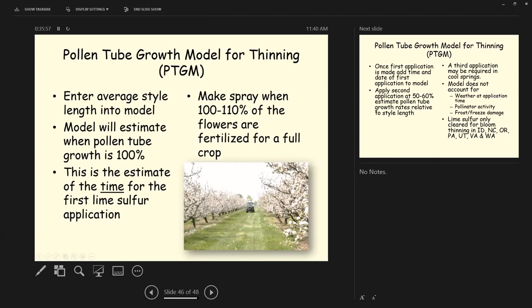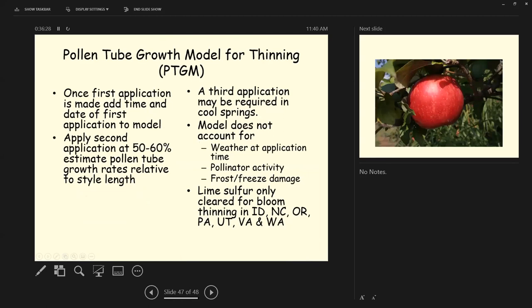The model estimates when the pollen tube growth is 100 percent. So you've gotten that pollen down to pollinate the ovaries in the flower. This is the estimate of the time for the first lime sulfur application. When you've got all the flowers on the tree that you want pollinated, then you spray to knock out the rest of them. So this spray is made at 100 to 110 percent of the flowers when those flowers are fertilized for a full crop. Now, once the first application is made, you add the time and the date of the first application to the model and you make a second application of lime sulfur at 50 to 60 percent of the estimated pollen tube growth rate relative to the style length. If you've got long styles, it's going to take longer for that pollen to grow down to the ovary. You may require a third application if we've got a cool spring. You're trying to keep these flowers from pollinating that come out after you've set your crop.